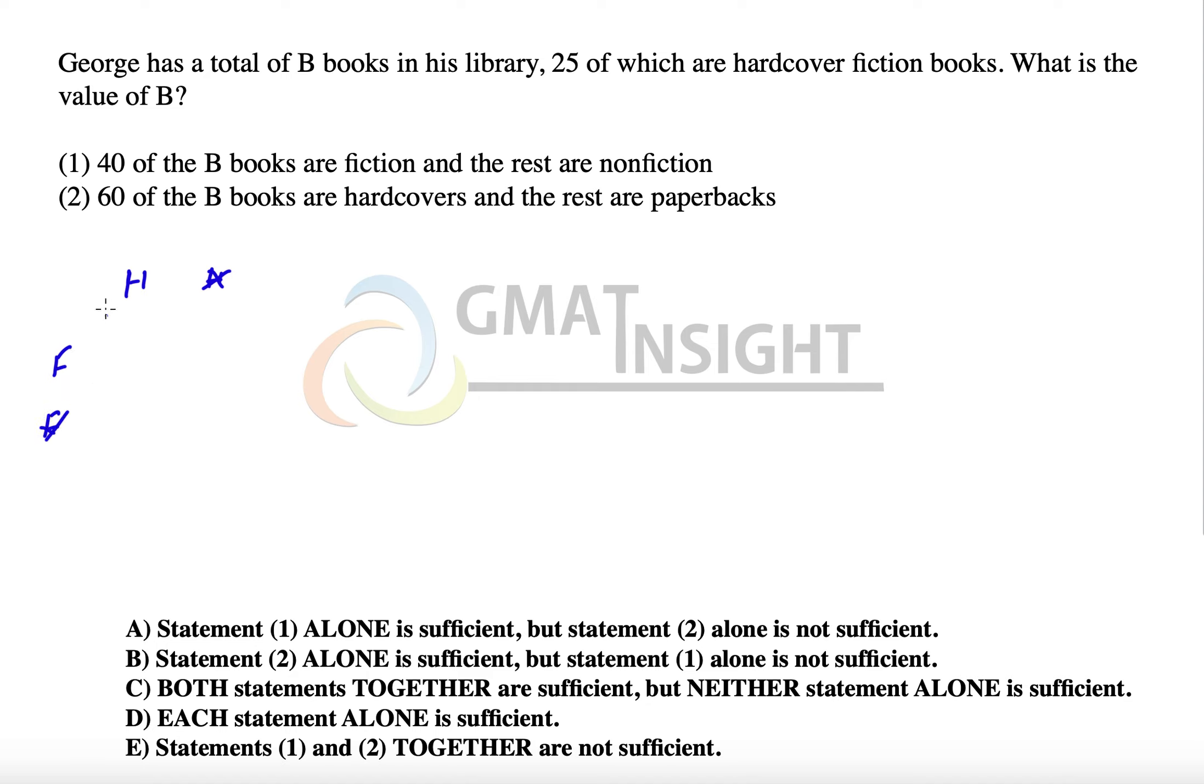25 are hardcover fiction, that means 25 comes here. And if we have the total books in the library as B, we have to find out the value of B. Now let's look at the first statement. The first statement here says that 40% of the books are fiction and the rest are nonfiction.